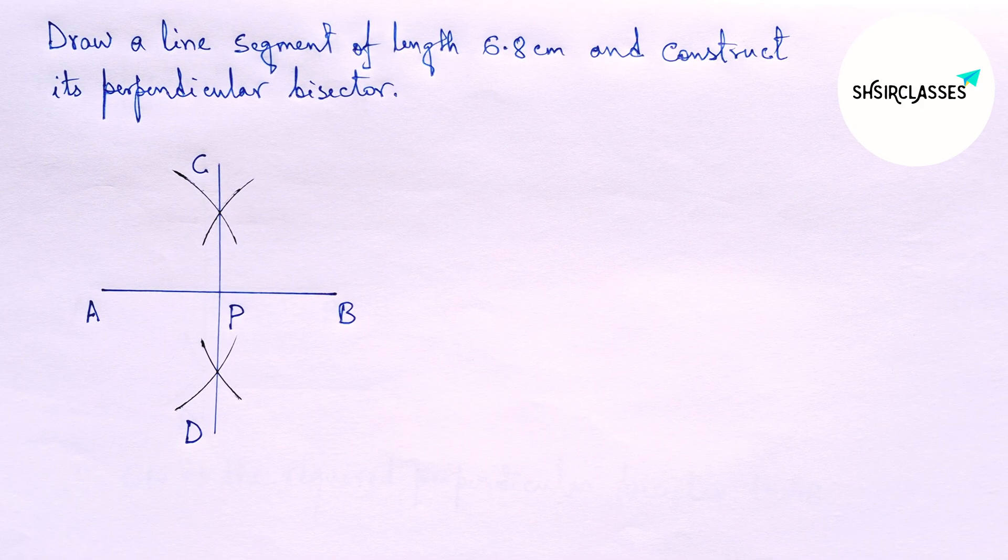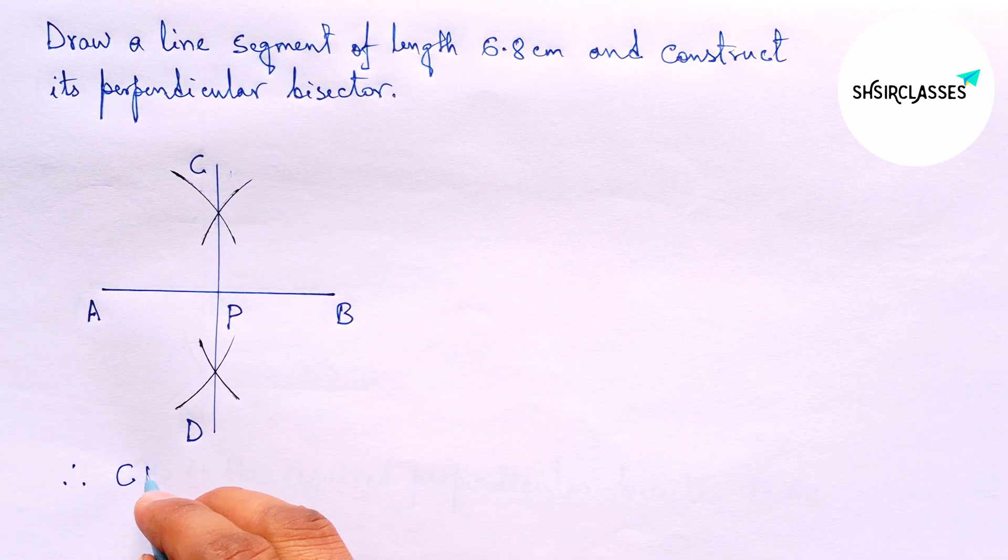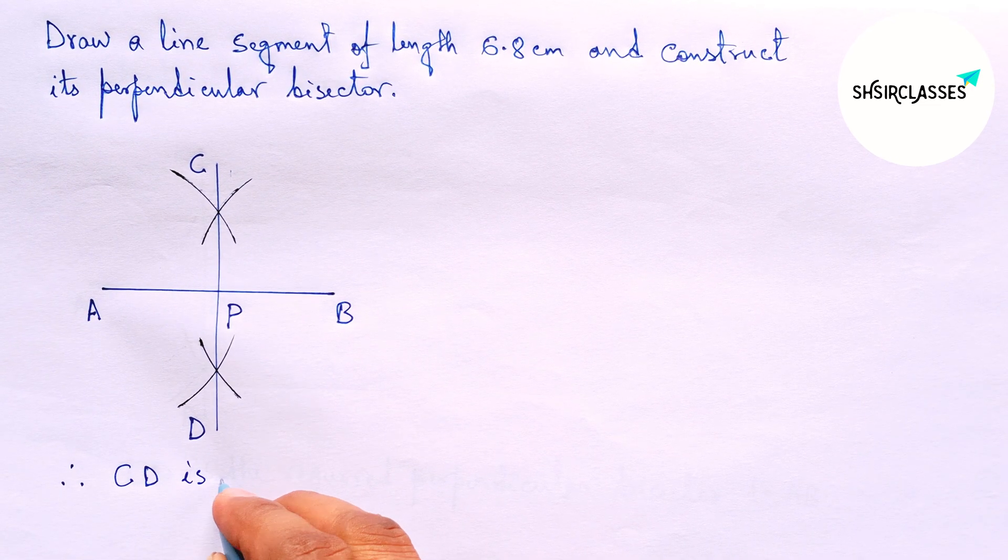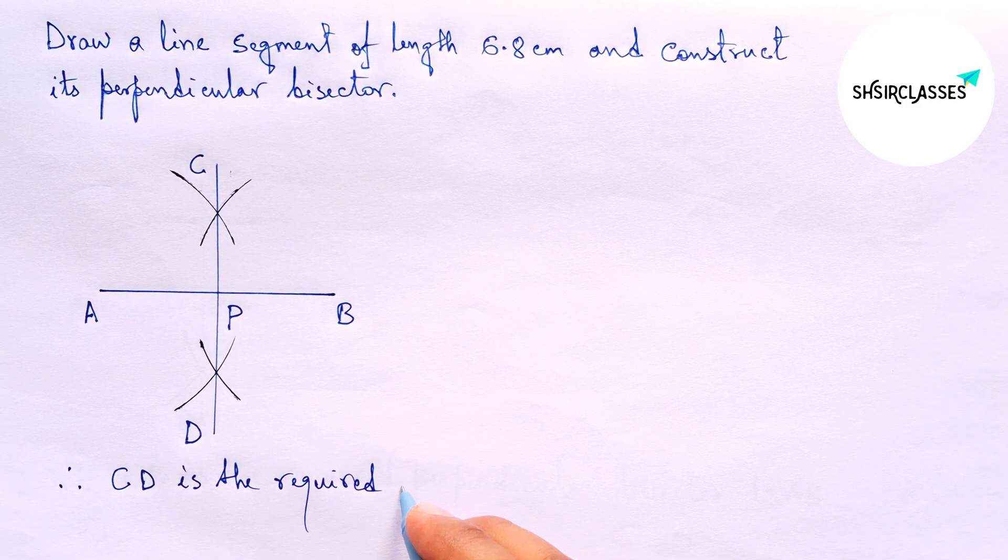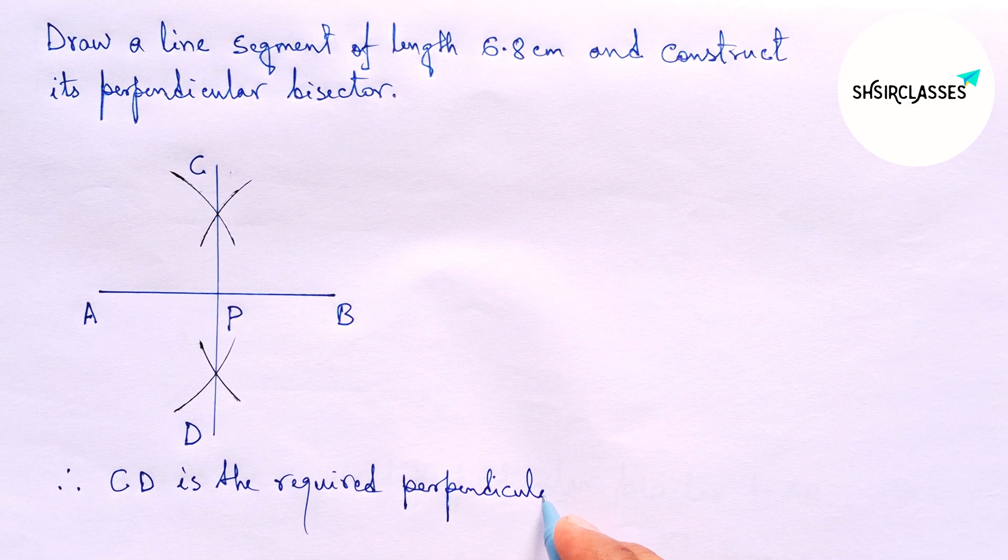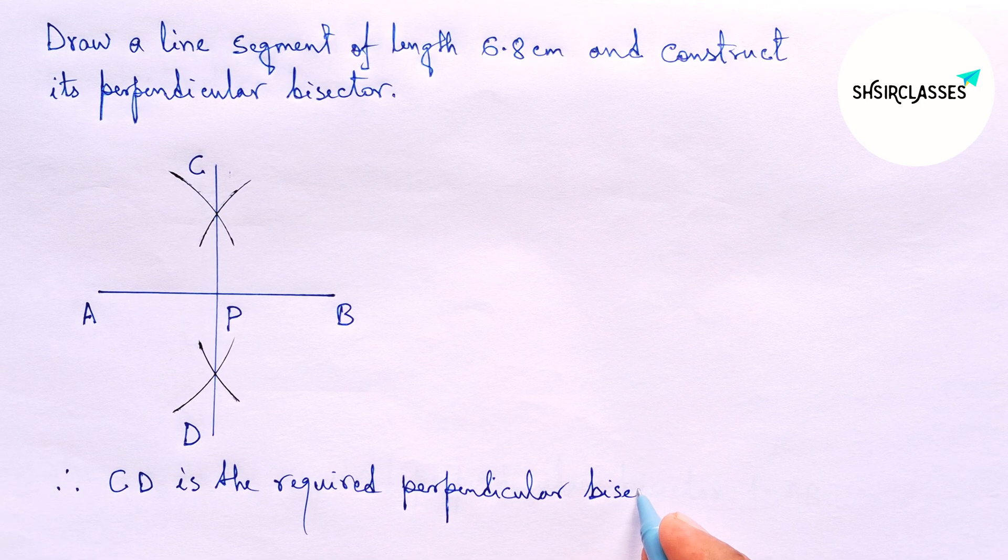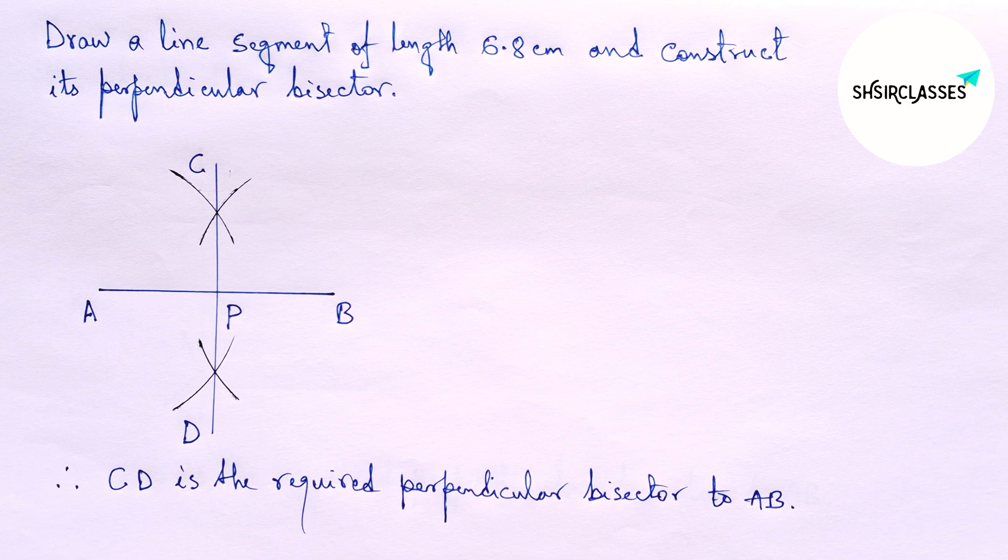So taking here point P. Therefore, CD is the required perpendicular bisector to the given line AB equal to 6.8 cm, and by this way you can construct a perpendicular bisector to a given line in an easy way.